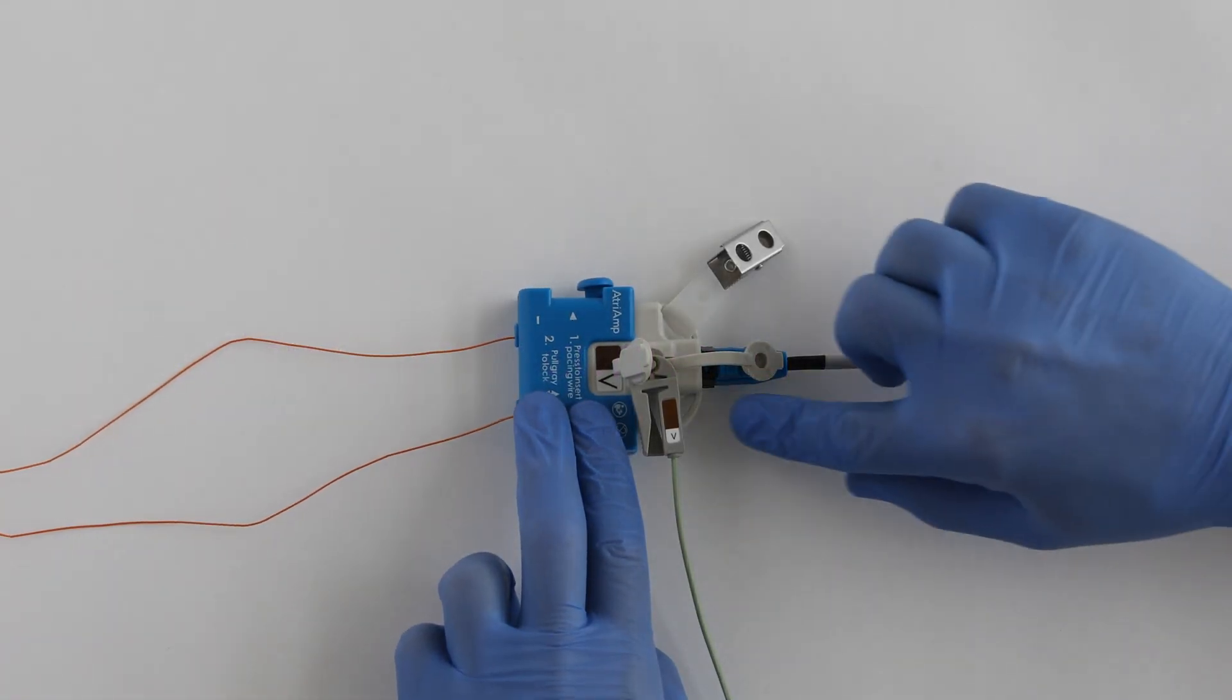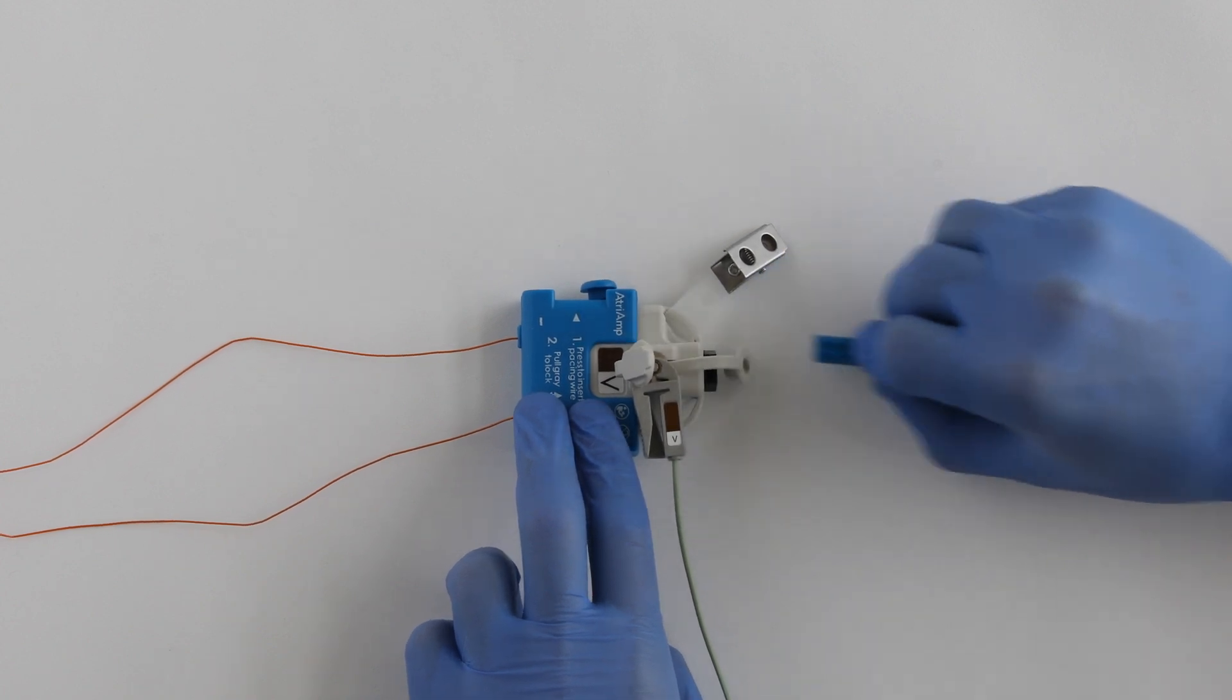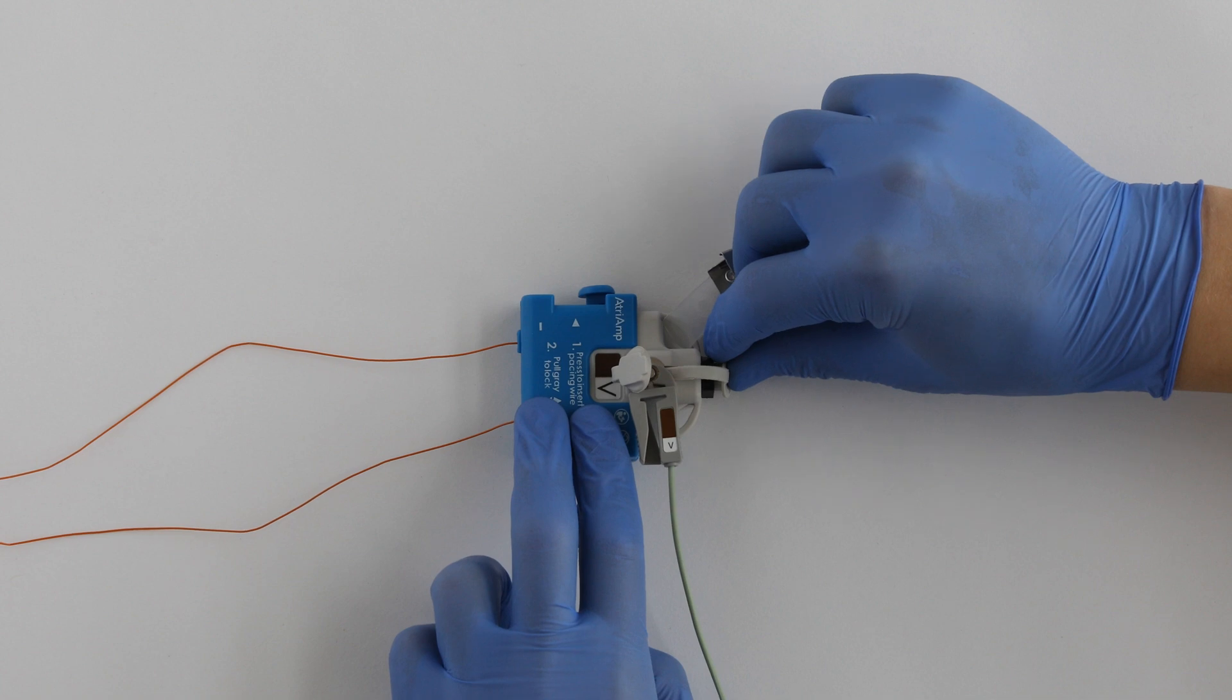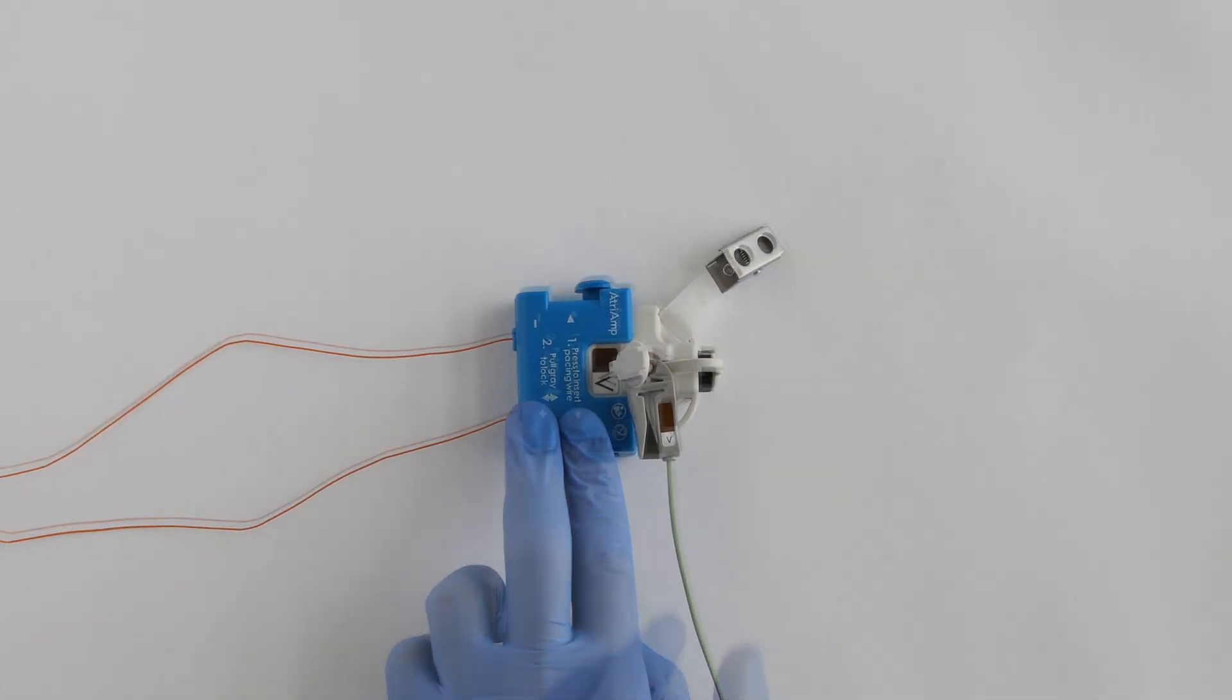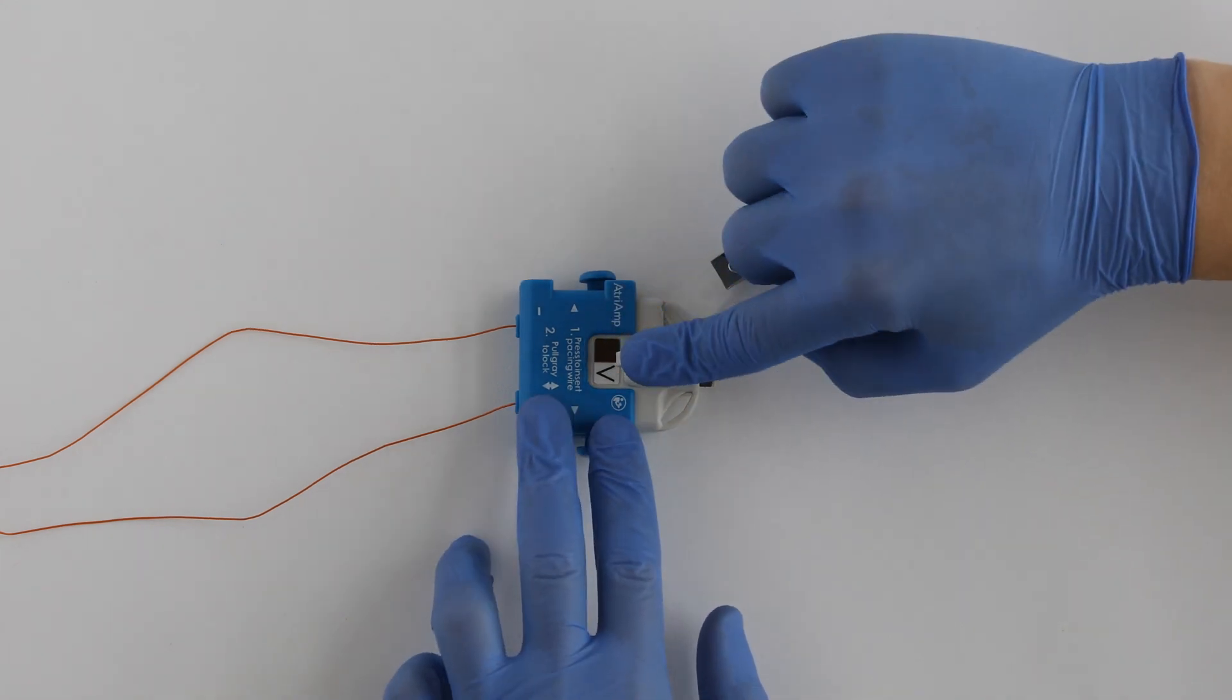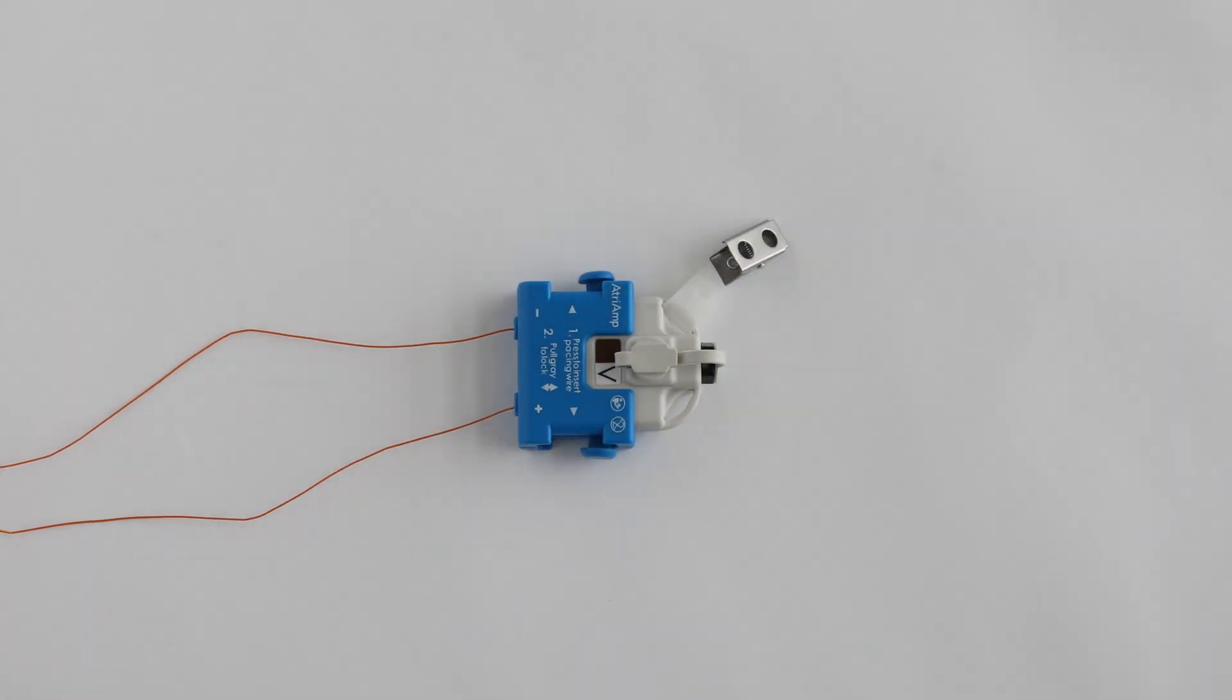Before disconnecting the pacing cable from the pacemaker, disconnect the pacing cable from the AtriAmp. Replace the protective connector plug in the AtriAmp pacemaker connector. Disconnect the ECG V-lead connector and replace the V-stud protective cap. If patient requires additional monitoring, reconnect the V-lead to a surface V-positioned electrode.